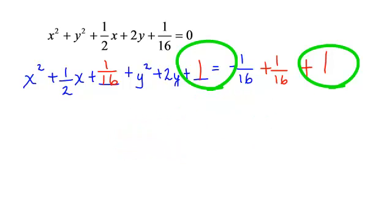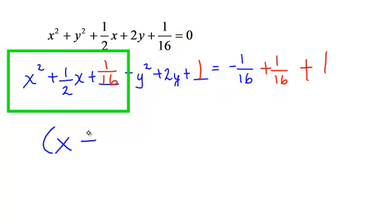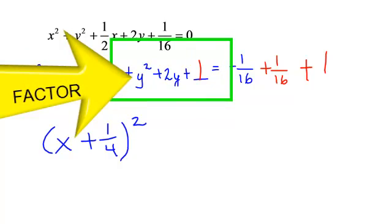Now let's do some factoring. Let's look at just these first 3 and see if we can factor that. x squared plus 1 half x plus 1 16th. That will factor. That is a perfect trinomial. It will factor into x plus 1 4th squared. 1 16th is perfect of 1 4th times 1 4th. Now let's try to factor our y's. Put my plus here, and that will be y plus 1 squared.